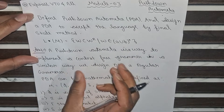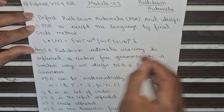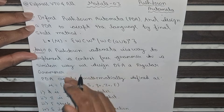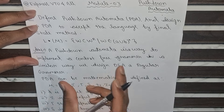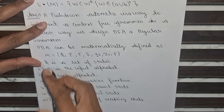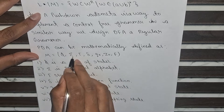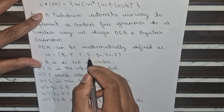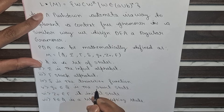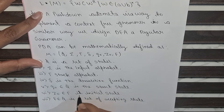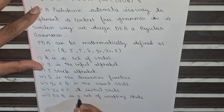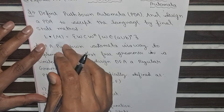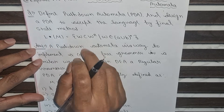Firstly, we will know what a pushdown automata is. A pushdown automata is a way to represent or implement a context-free grammar, similar to how we design a DFA or regular grammar. There are 7 tuples in a PDA: Q is the set of states, the input alphabets, the stack alphabet, the transition function, Q0 is the start state, Z0 is the initial stack symbol, and F is the set of accepting final states. Now we will move to design a PDA to accept this language by the final state method.